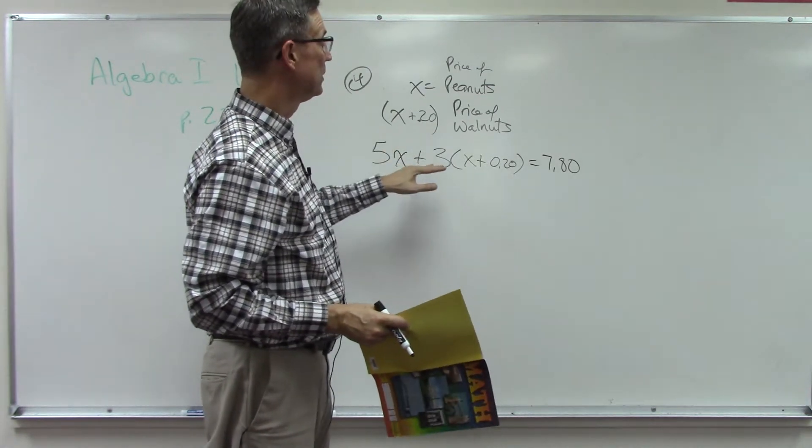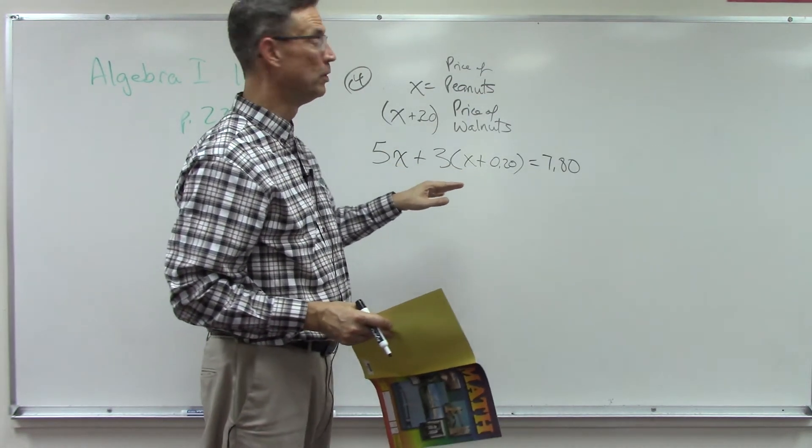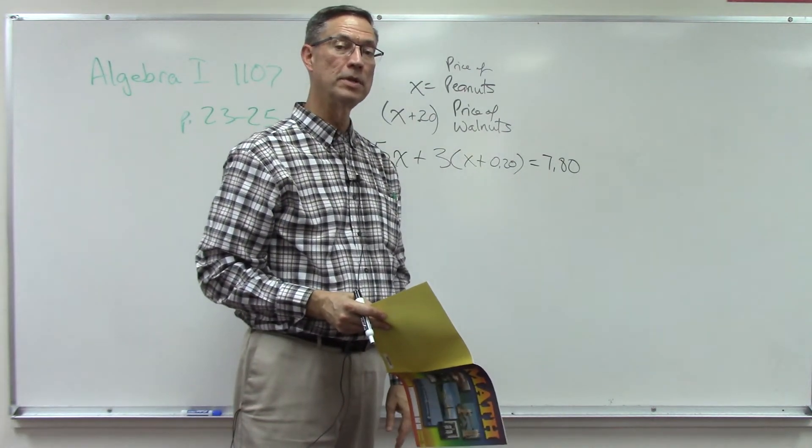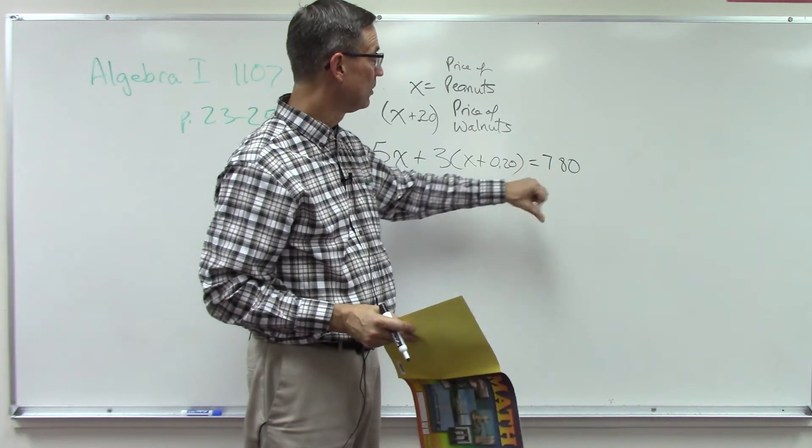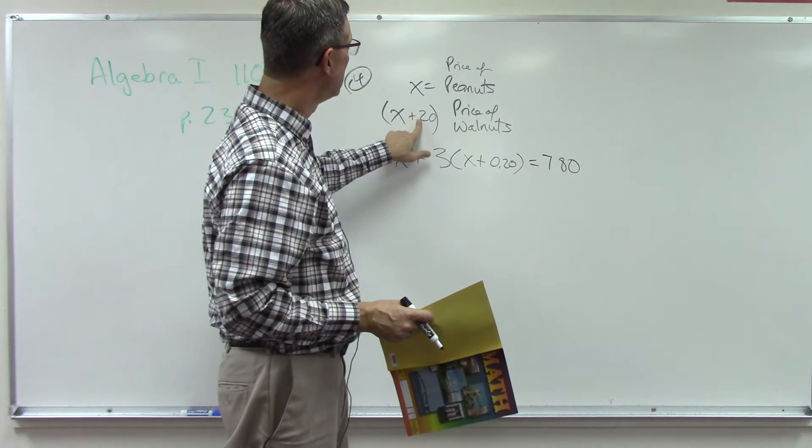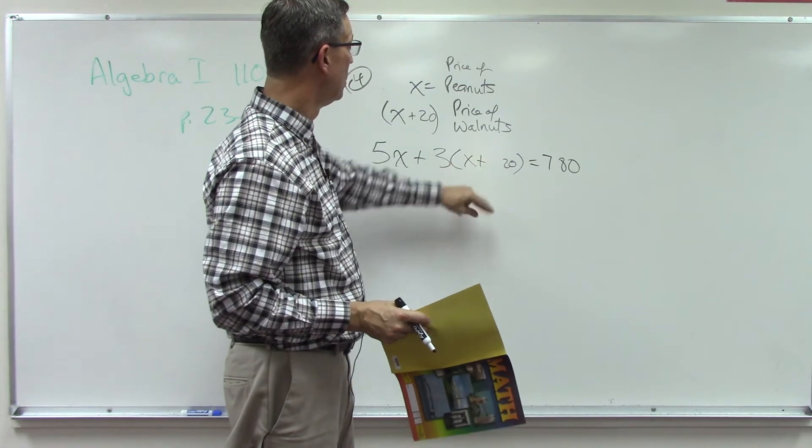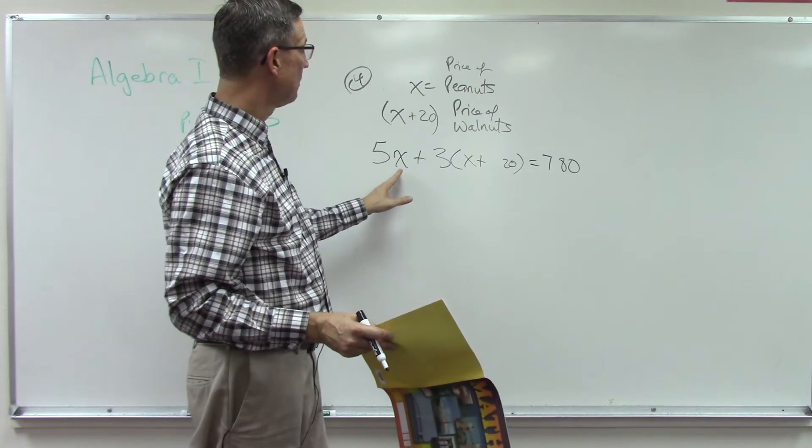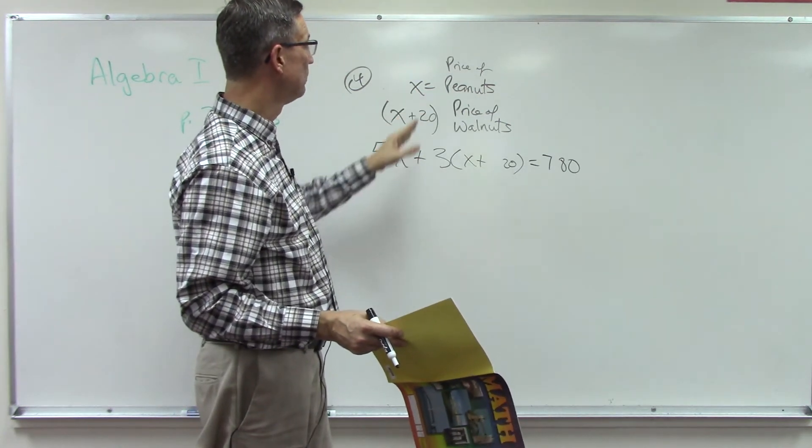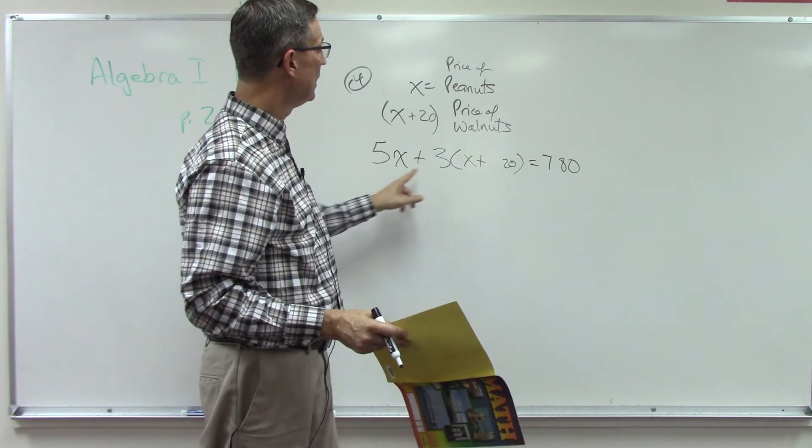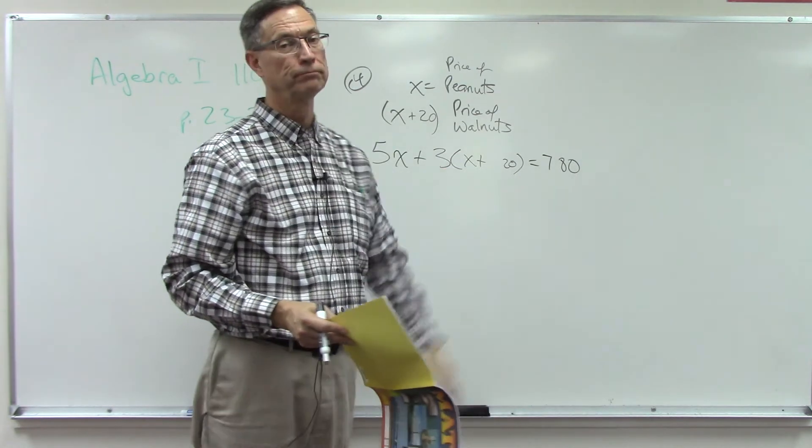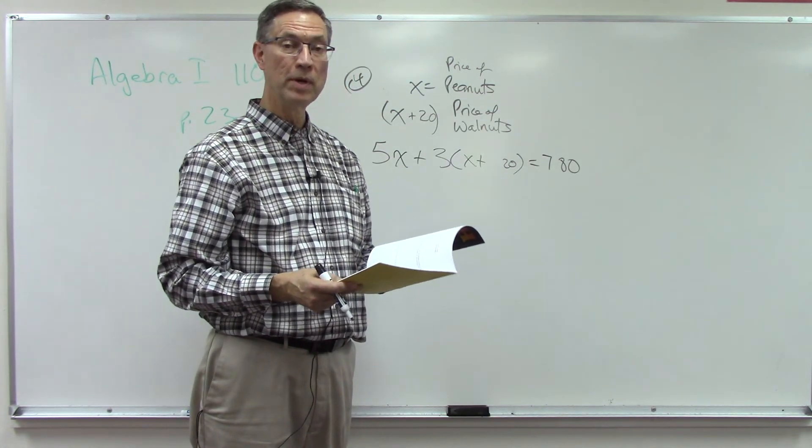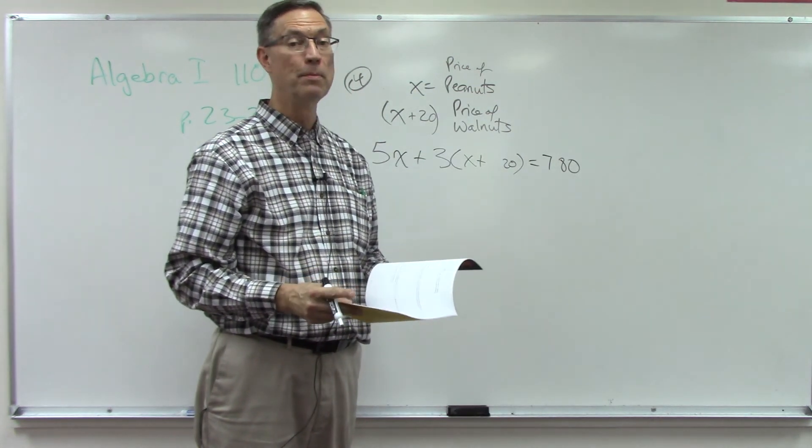Another way you could do this to not have to deal with decimals is put it all in cents. So how many cents is in seven dollars and eighty cents? It would be 780. So if we got rid of this decimal, got rid of this decimal here, now we could solve and do exactly the same problem. The answer is going to come out in cents per pound instead of dollars, and it'll be a whole number, easy to calculate. I'm going to let you finish three and four and we'll come back and do a short video about percent problems.